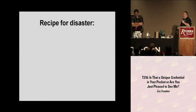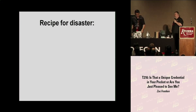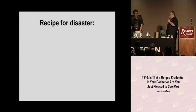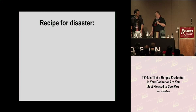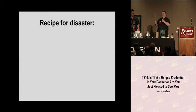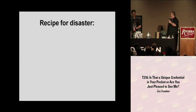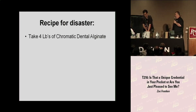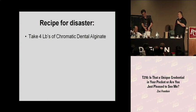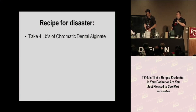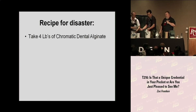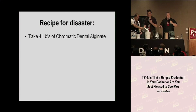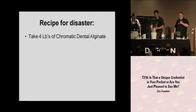This is going to get a little bit mad because the stuff we're playing with here is going to go from powder to liquid to solid very fast. Take four pounds of chromatic dental alginate and add it to a bucket. Chromatic dental alginate is fantastic stuff - the first line in the instructions says it has a pleasant dentist's waiting room smell. I went for the one with the dentist's waiting room smell, I didn't cheap out on you guys.